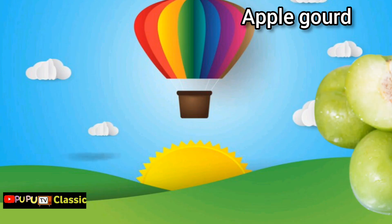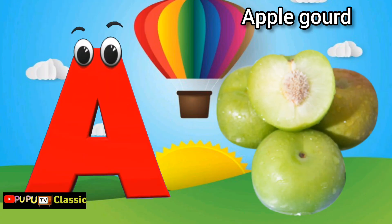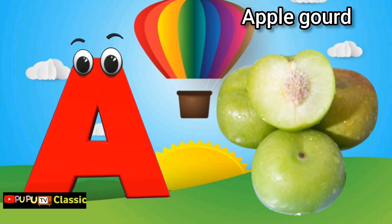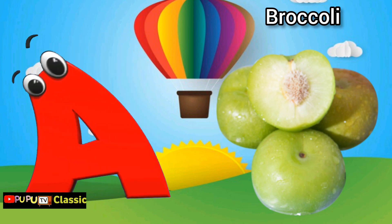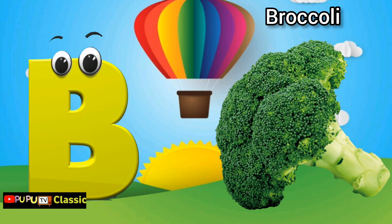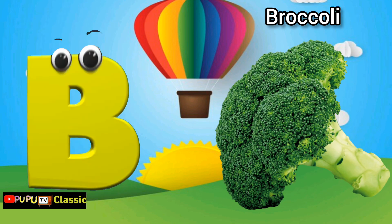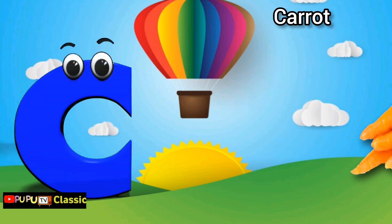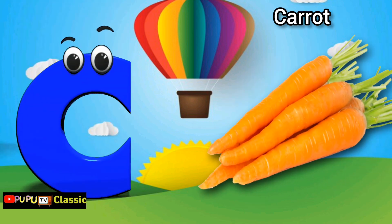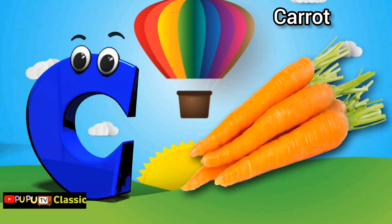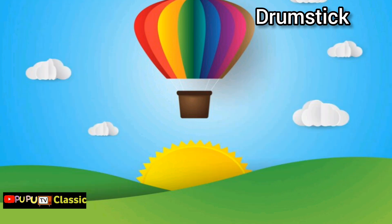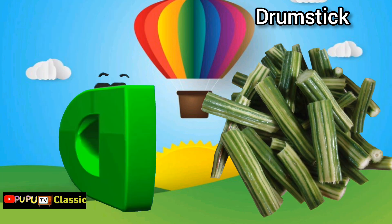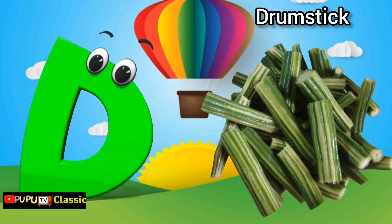A is for apple gourd, apple gourd. B is for broccoli, broccoli. C is for carrot, carrot. D is for drumstick, drumstick.